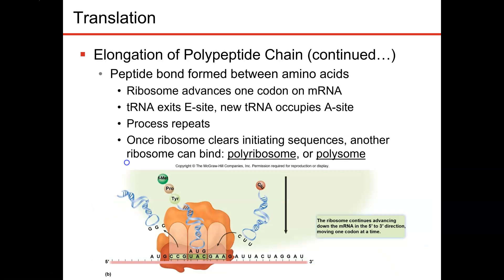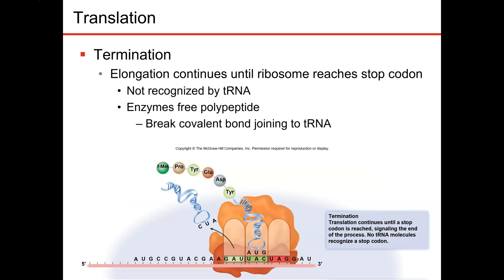This is going to continue every time a new transfer RNA with a new amino acid enters that A-site. We're going to produce another peptide bond and shift all of the polypeptide onto the new amino acid. This continuously produces a longer and longer polypeptide of amino acids, allowing the transfer RNAs to move off and pick up new amino acids. This continues until we hit a terminator sequence. UAG is one of the three terminator sequences, and when we hit that, there's no transfer RNA or amino acid coded for, so translation stops.